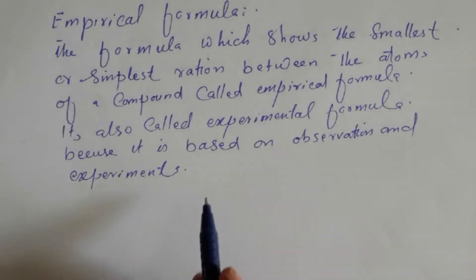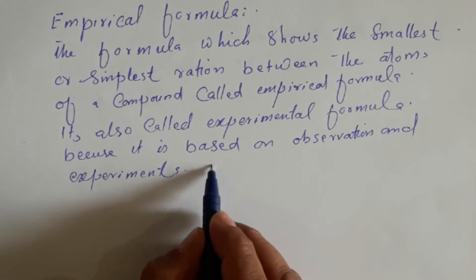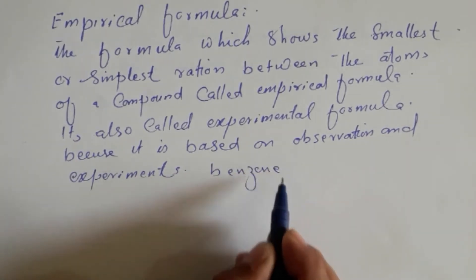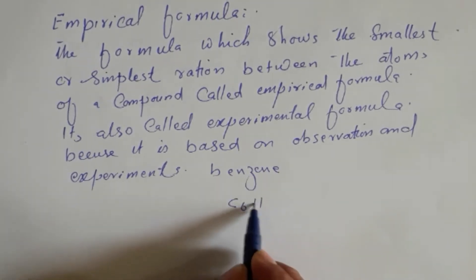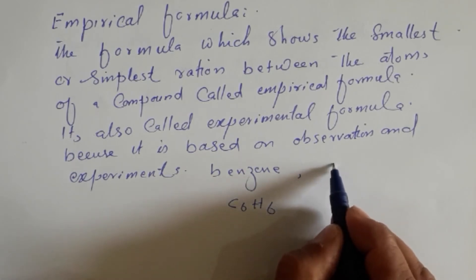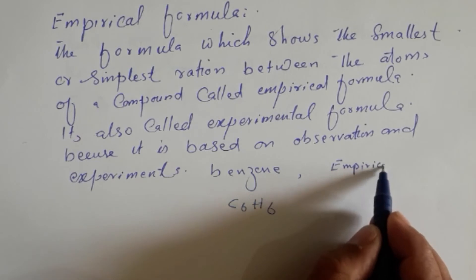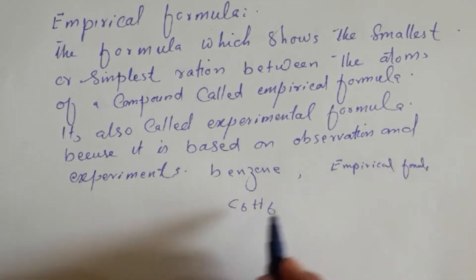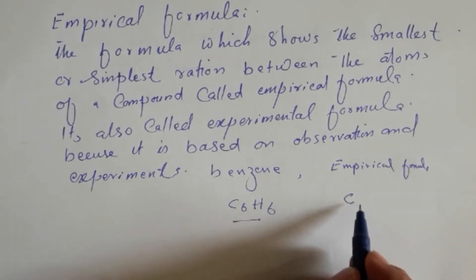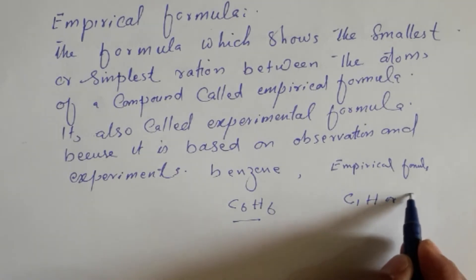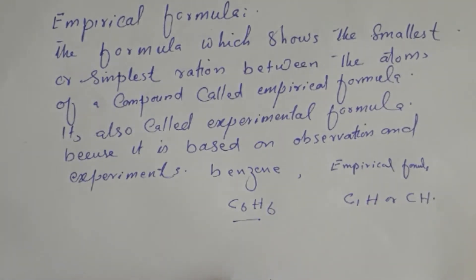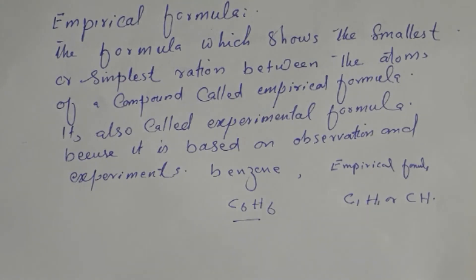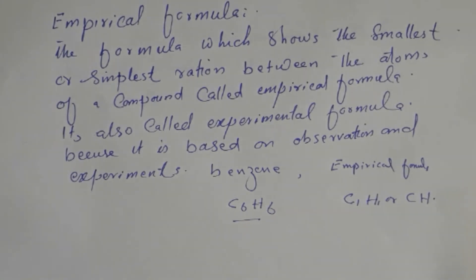For example, the molecular formula of benzene is C₆H₆. Its empirical formula is CH — meaning the simplest ratio of carbon to hydrogen is 1:1. So the empirical formula of benzene is written simply as CH.